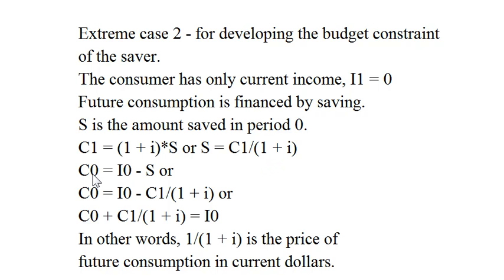Current consumption C0 equals current income less how much is saved. Or current consumption is equal to current income less future consumption discounted by (1 + i). Or adding C1/(1 + i) to both sides of the equation.